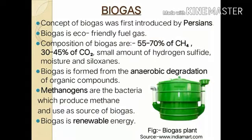The composition of biogas is 55 to 70 percent methane, 30 to 40 percent carbon dioxide, and small amounts of hydrogen sulfide, moisture, and siloxanes. Siloxanes are a functional group of silicon. Biogas is formed from the anaerobic degradation — in the absence of oxygen — of organic compounds in a digester tank.